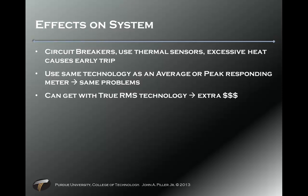Circuit breakers also have issues — most have thermal sensors. Excessive heat causes early tripping, and harmonics cause heat. Most circuit breakers use the same technology as an average-responding meter, making the same fudge-factor assumption. You can get true RMS technology circuit breakers, but that means putting a microprocessor on every breaker rather than a standard magnetic and thermal strip — and again, it's extra money.